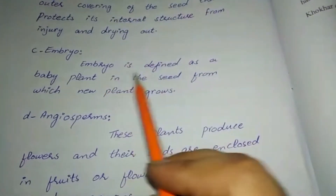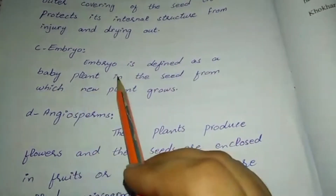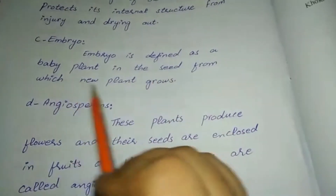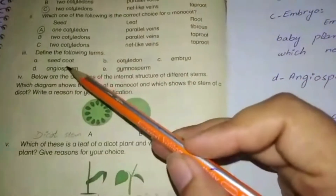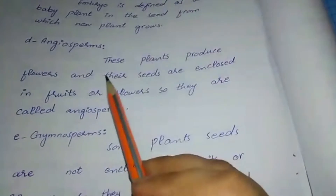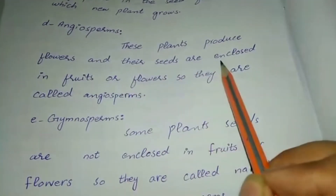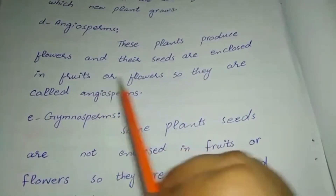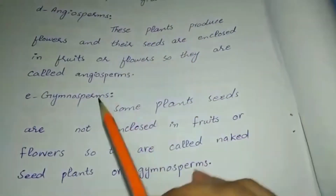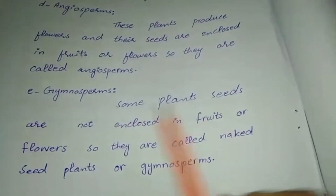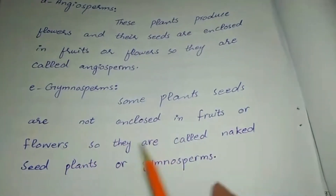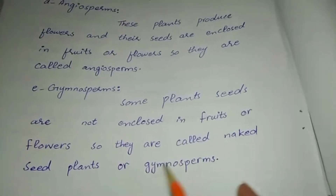The next definition is embryo. The embryo is defined as a baby plant inside the seed from which a new plant grows. The next definition is angiosperm and gymnosperm. Angiosperms produce flowers and their seeds are enclosed in fruits or flowers, so they are called angiosperms. Gymnosperms are plants whose seeds are not enclosed in fruits or flowers, so they are called naked seed plants or gymnosperms.